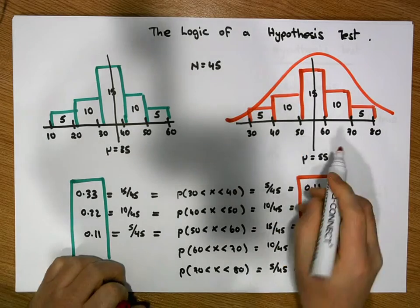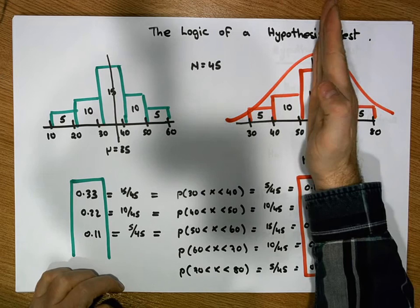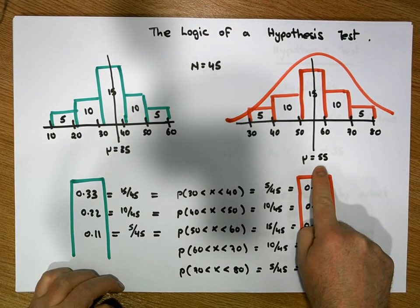Happening in the tails are very, very small. If the distribution is centered on 55, the probabilities of events occurring in the tails are very small.